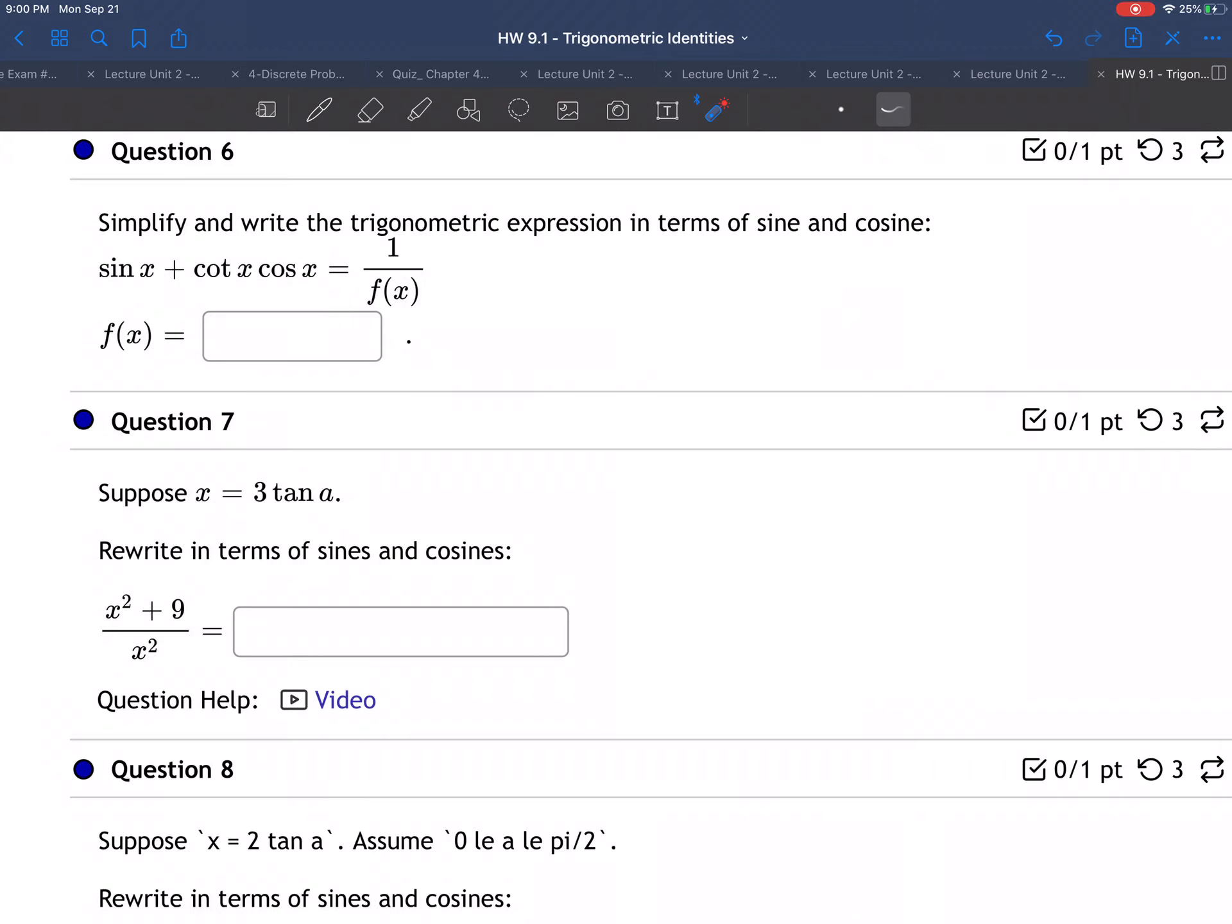Here's an example in which we've got sine plus cotangent times cosine, and they want us to simplify and write this expression in terms of sine and cosine.